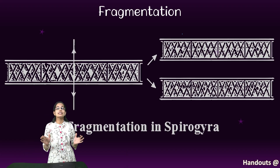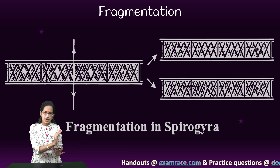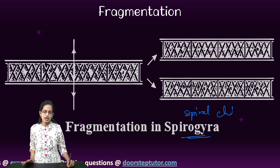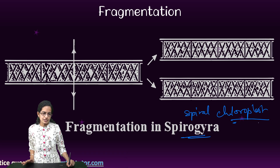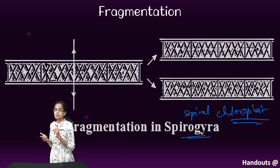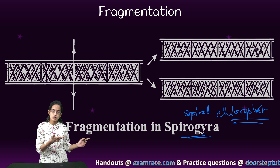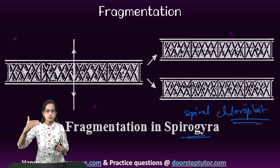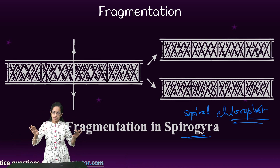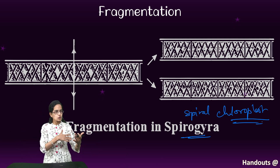The next process is fragmentation, and the common example is Spirogyra. Spirogyra is notable for its spiral chloroplasts, and there are more than 400 species. Spirogyra reproduces by fragmentation, sexual reproduction, and asexual reproduction. In fragmentation, independent filaments are fragmented and each filament has the capability to form a new Spirogyra.